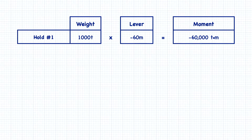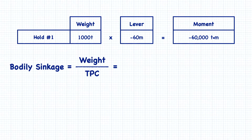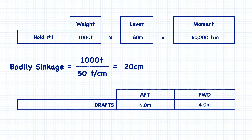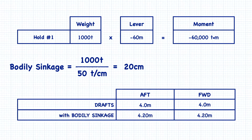With this information, the first step to determining our drafts is to calculate the amount of bodily sinkage caused when we add the weight. The amount of weight added is 1,000 tons, and the tons per centimeter immersion is 50 tons, so the bodily sinkage will be 20 centimeters. Adding the bodily sinkage to our initial drafts of 4 meters brings our drafts down to 4.20 meters. Bodily sinkage gets added equally to both drafts.